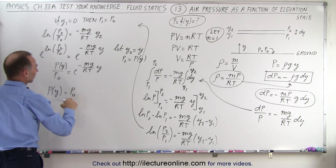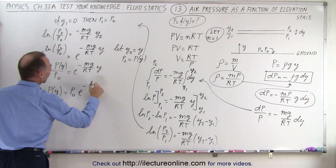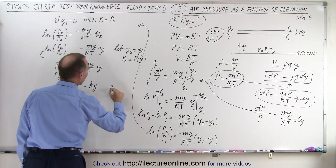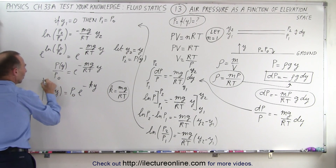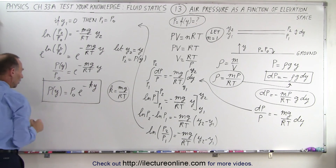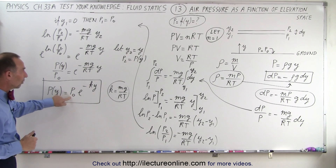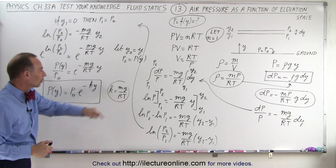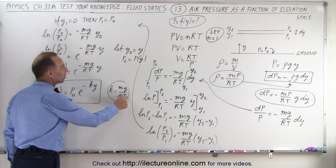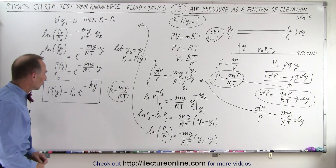So P as a function of y equals P sub zero times e to the negative k times y, where k equals mg over RT. This is our equation for air pressure above the ground: the initial pressure at ground level times e to the negative ky, where R is the gas constant, T is the temperature, m is the mass, and g is the acceleration due to gravity.